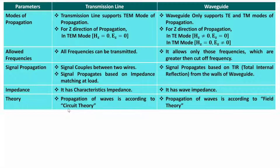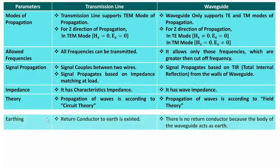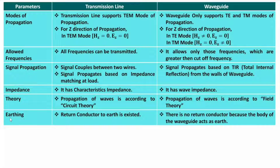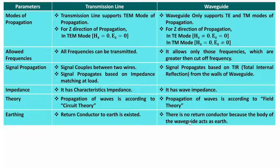The next parameter is earthing. In a transmission line, there is a return conductor to earth, forming a closed loop. In a waveguide, there is no such return conductor; instead the surface of the waveguide itself acts as the earth, and there is reflection from that surface.